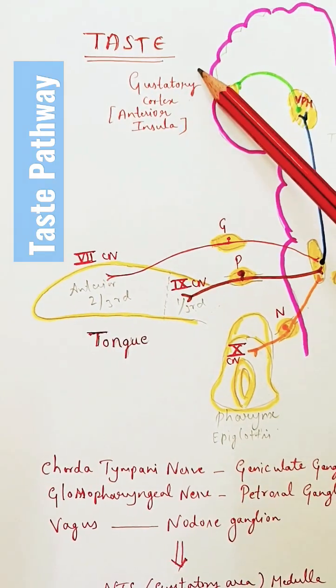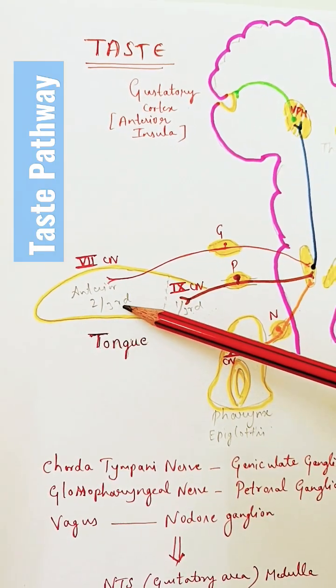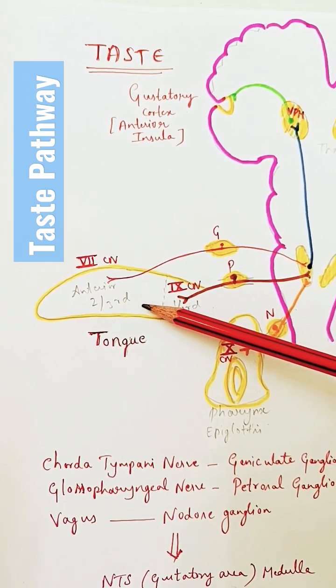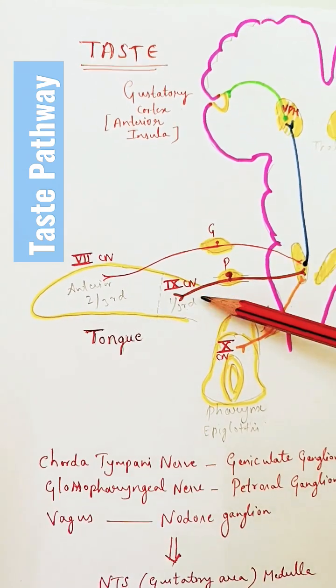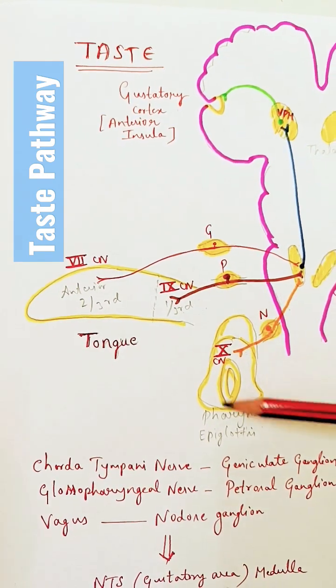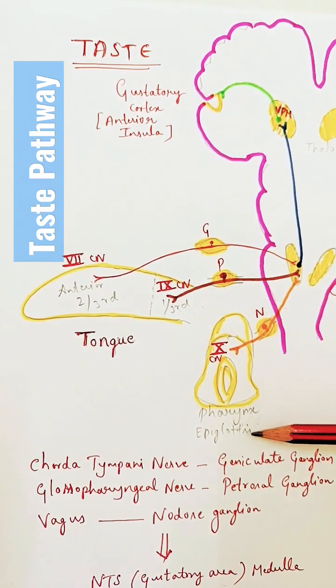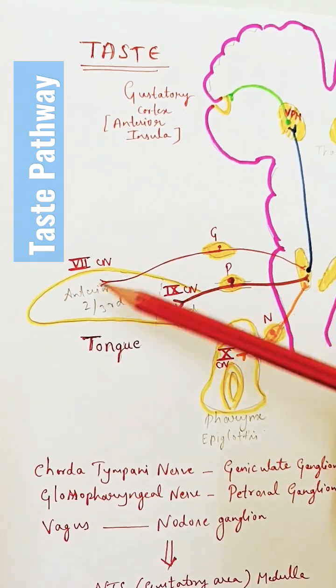In today's video, we will learn about the taste pathway. The taste buds are the receptors for taste sensation. Taste buds are distributed in the tongue and in the posterior portions like the pharynx, epiglottis, palate, and more.